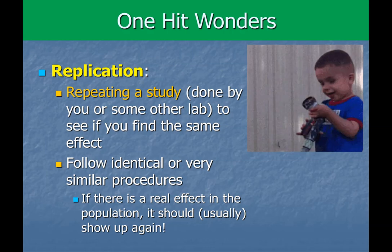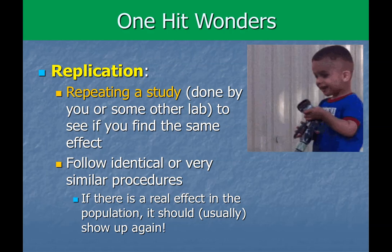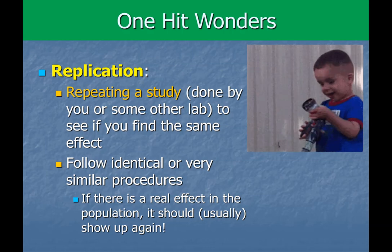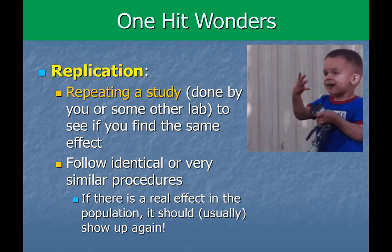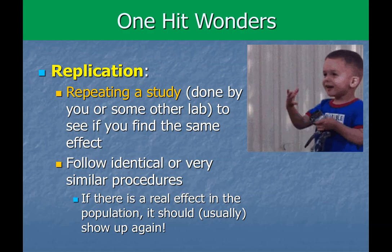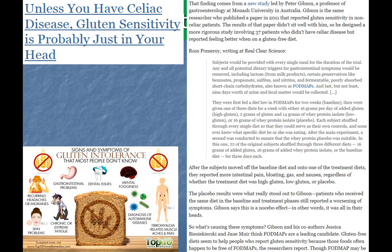This gets ignored in science journalism, where journalists write about a brand-new study because it's newsworthy and grabs attention — whereas a replication showing the same thing seen two or three times before may not be as exciting. But that's what actual science is; that's what gets us to feel sure that this is how the world works. So replication is really important. As a real-life example from the medical field, there was a researcher in Australia who published research on gluten insensitivity — specifically non-celiac gluten insensitivity.